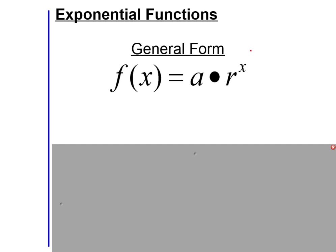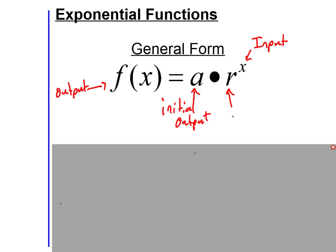Let's recap: x is our input — every function must have an x. f(x) is our output, sometimes written as y. Our a is our initial output, and r is what we call the rate — the thing we're doing to the output every time, whether that's doubling it, cutting it in half, multiplying by 3, dividing by 4, or whatever it may be.